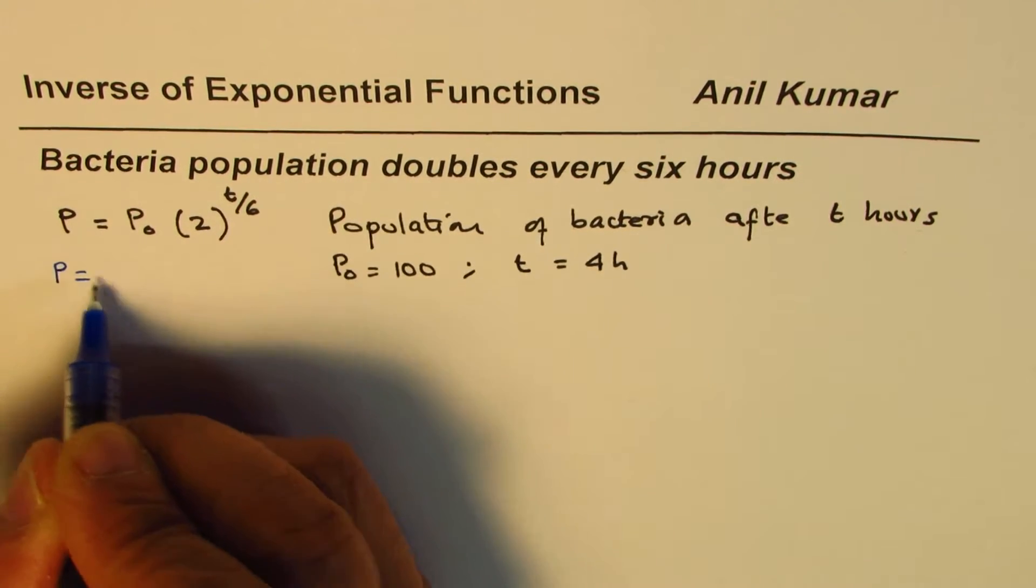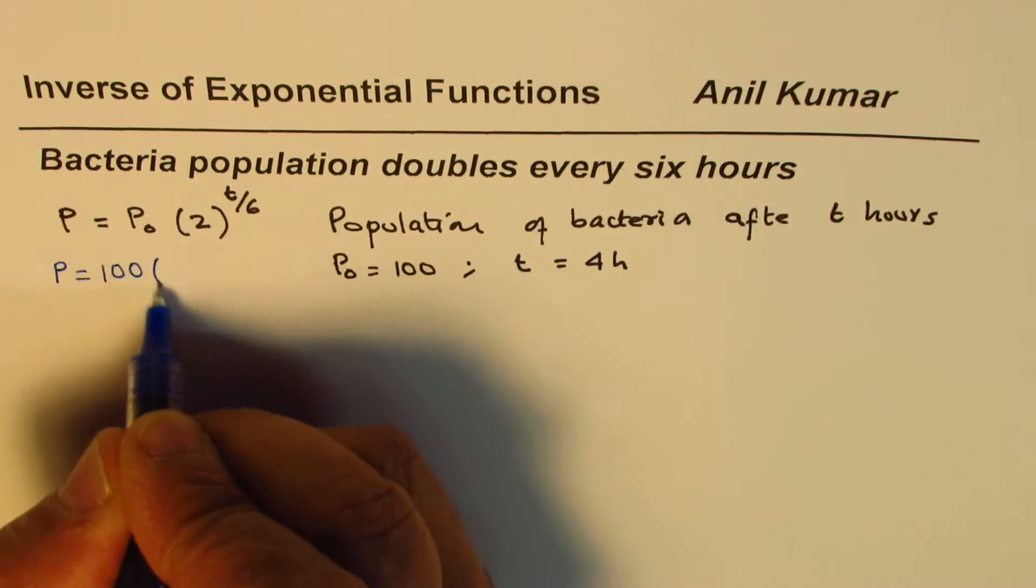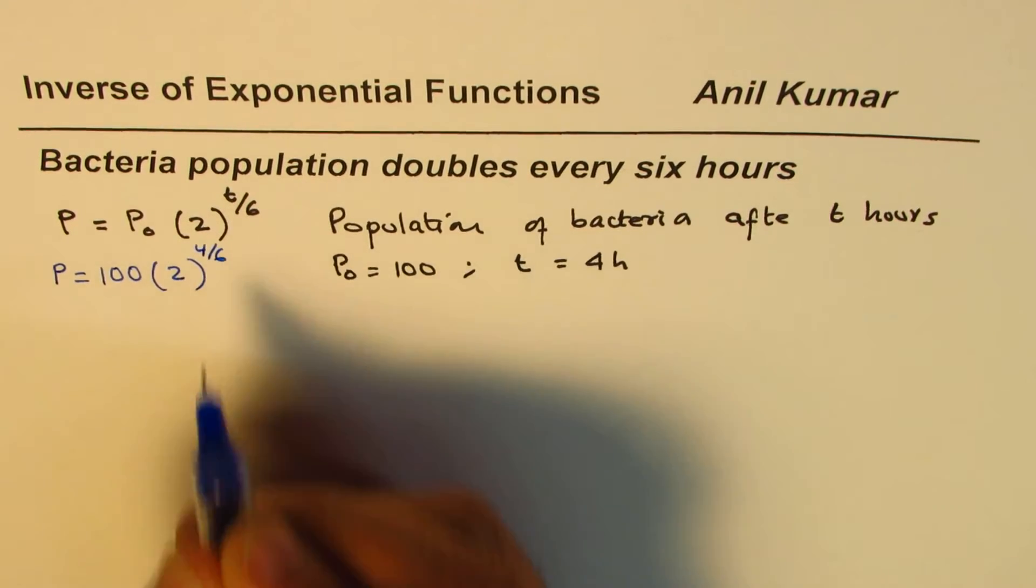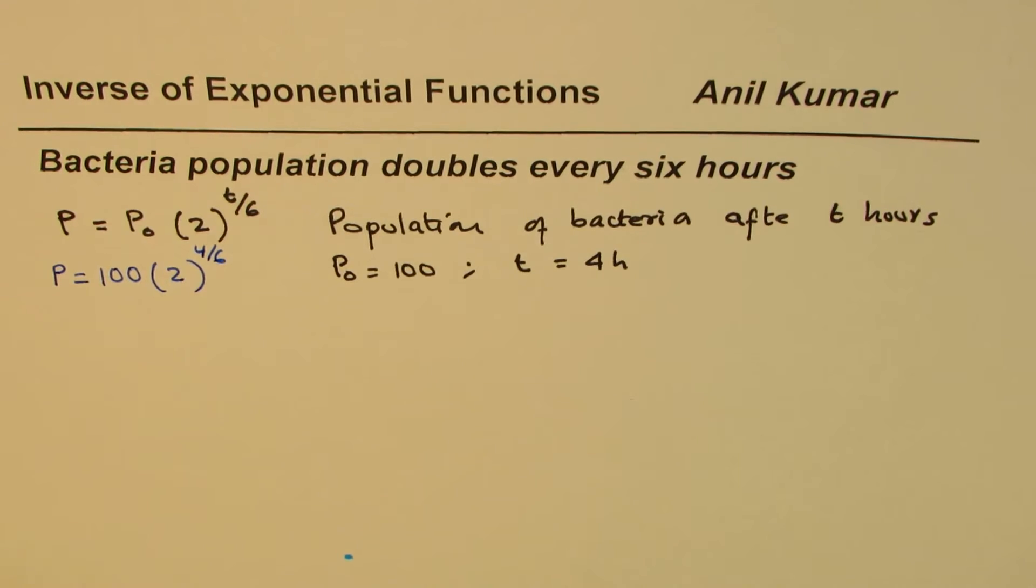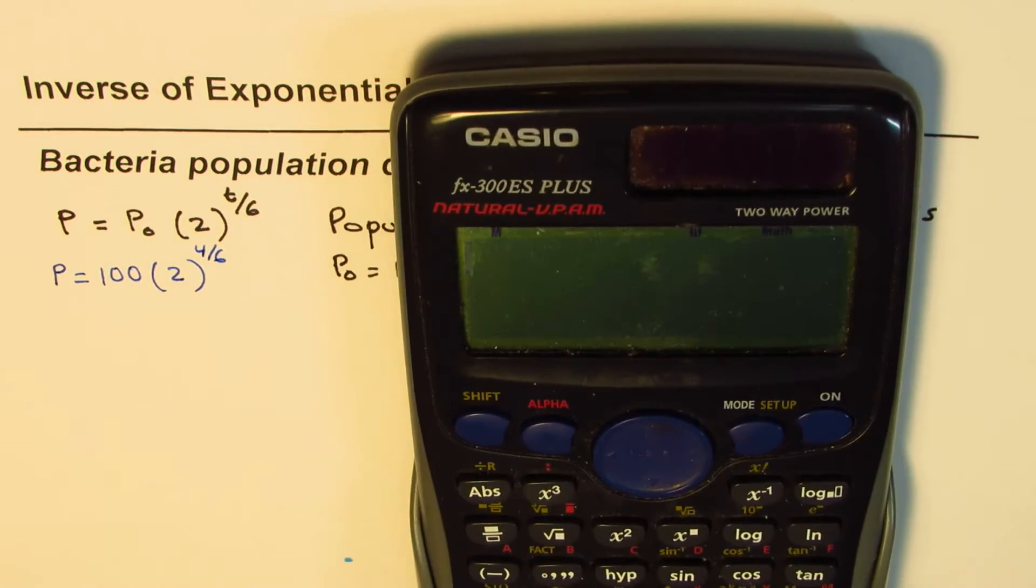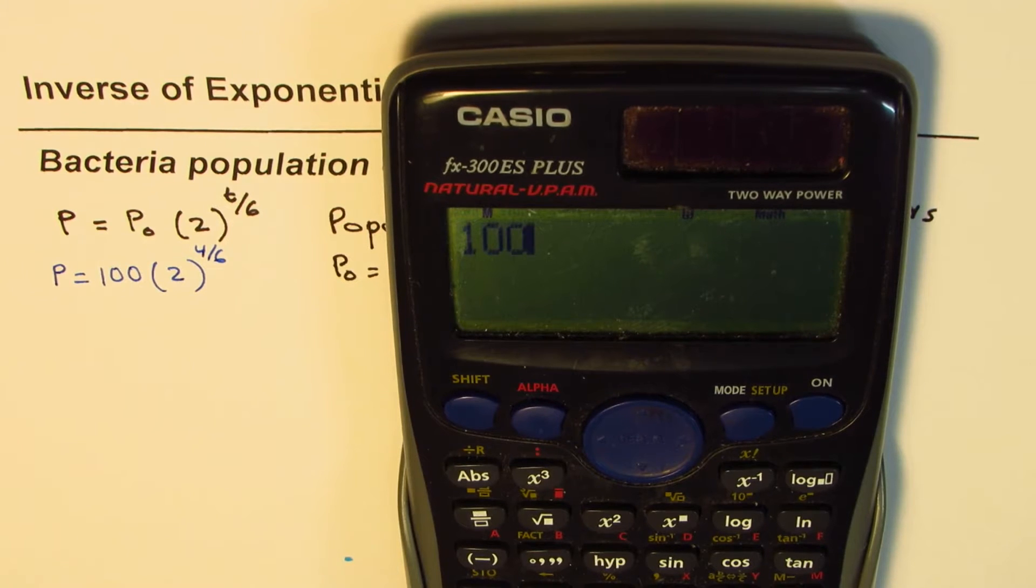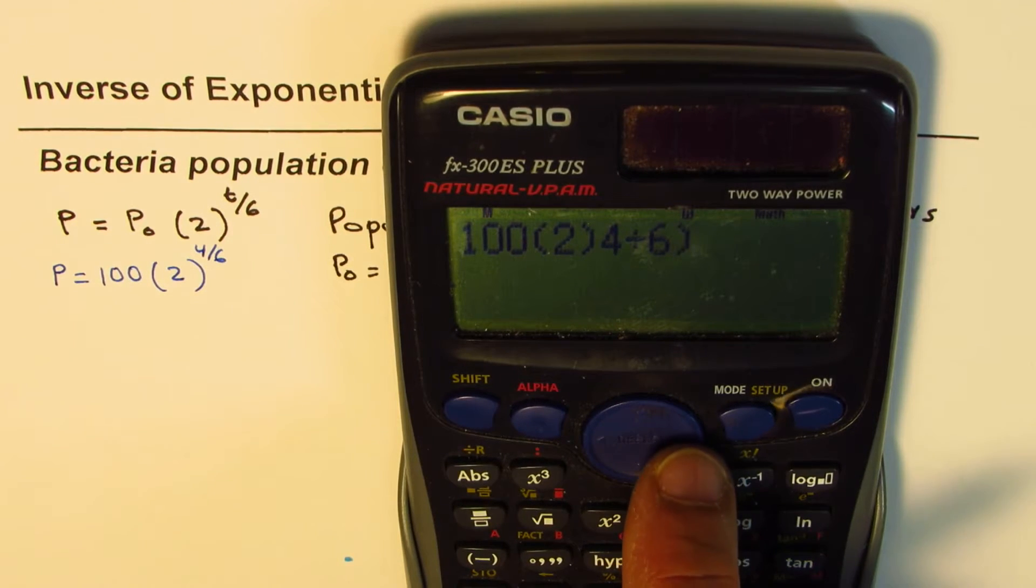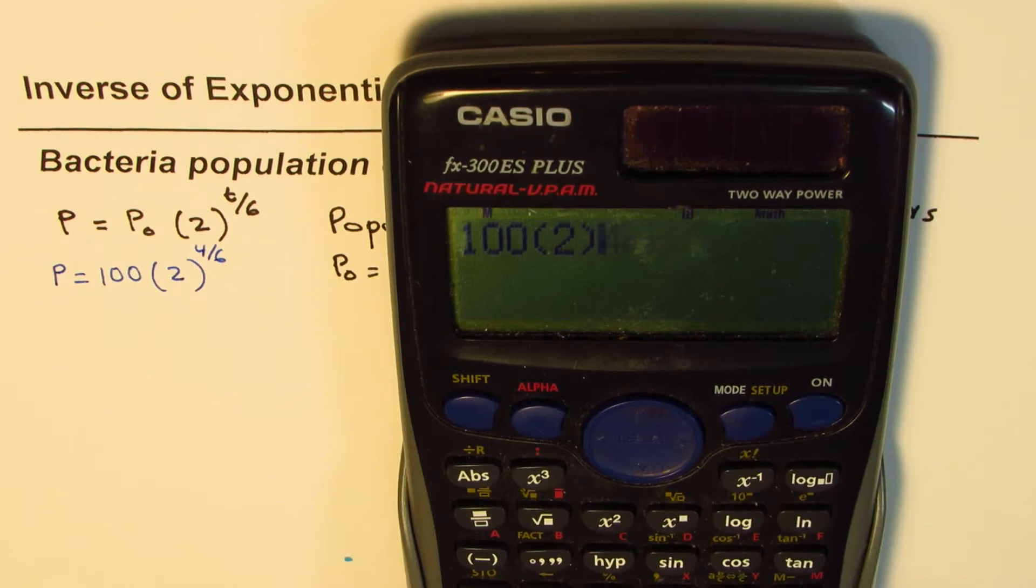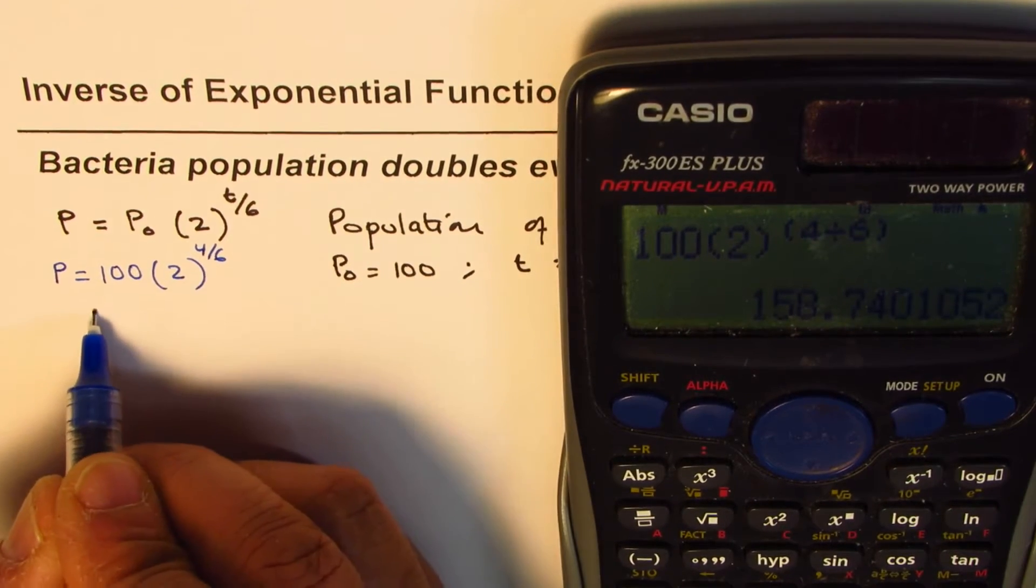So it could be hundred within brackets two to the power of, within brackets four divided by six. We do not write power, okay, to the power of within brackets four divided by six is equal to, so we get 158.7, so we could write this as 158.